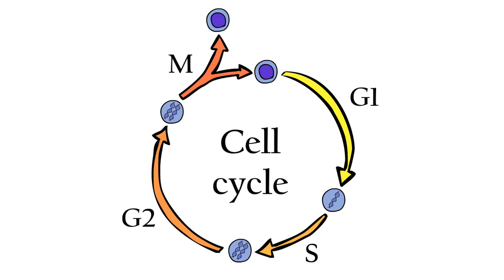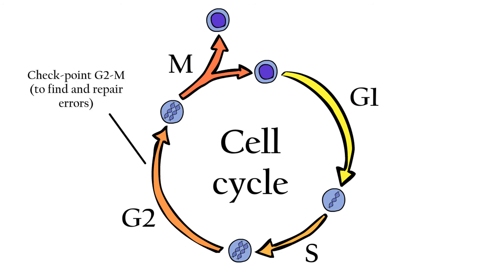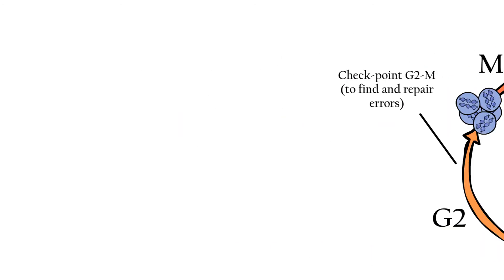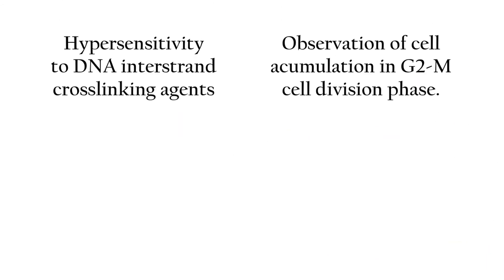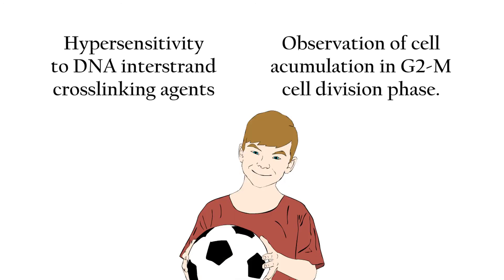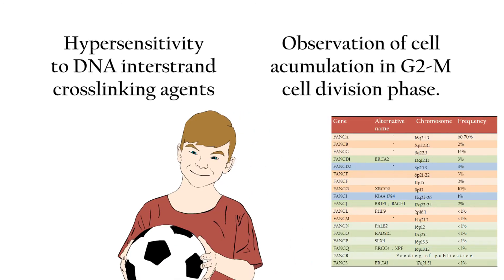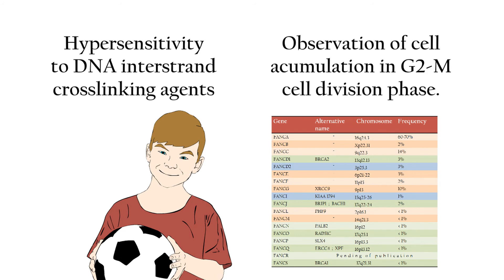In order to be more certain, a complementary test can be done to check whether cells are accumulated in a cell cycle transition called G2/M. This is due to cells having checkpoints that prevent themselves from starting division if anomalies are found. In Fanconi anemia, a checkpoint detects DNA damage that is not being repaired. Therefore, cells should be accumulated at the G2/M transition. However, while both tests let us know if a patient has Fanconi anemia, none of them is able to find out which gene is affected.